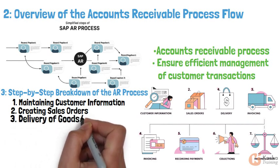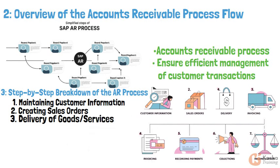Step 3: Delivery of Goods and Services. Once the order is confirmed, deliver the goods or services to the customer. This step involves picking items from inventory, packing them, and shipping them to the client.